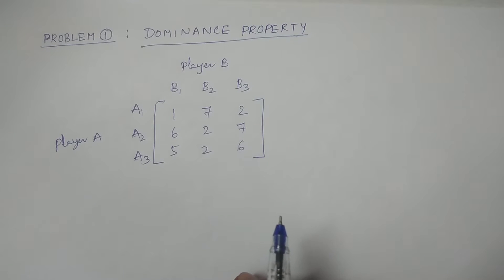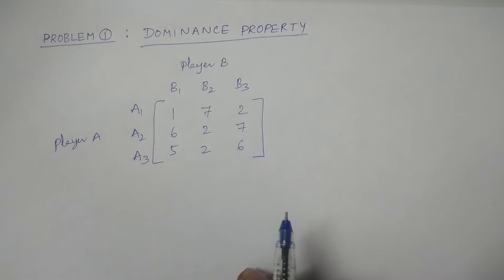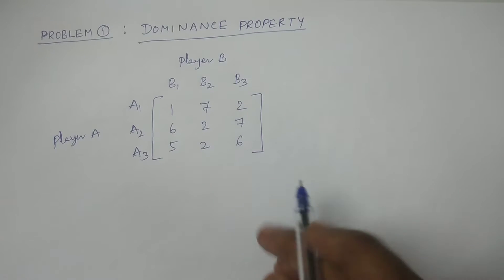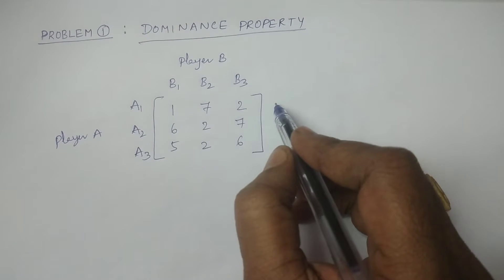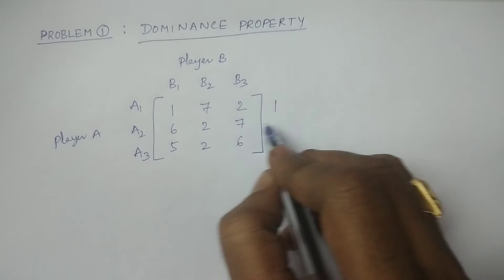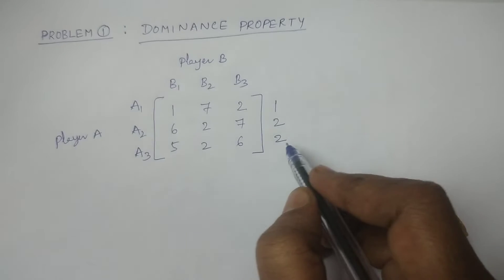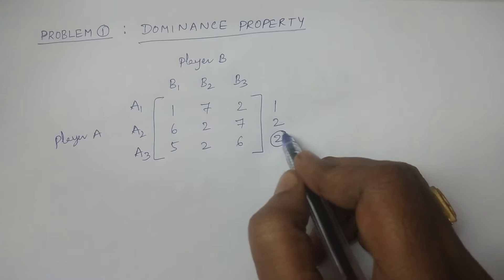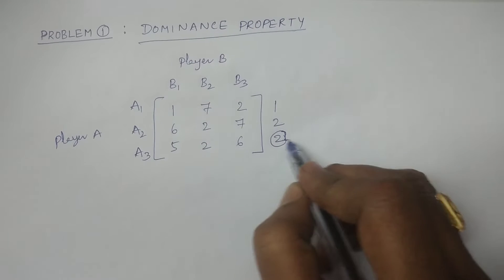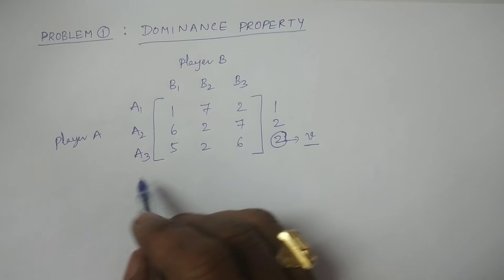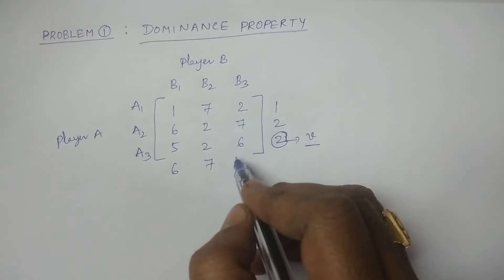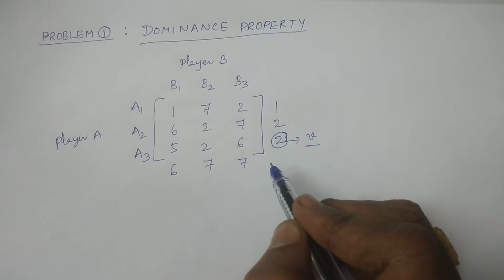If you have a saddle point, you check the problem with the Dominance Principle — this method applies to the saddle point. The row minimums are 1, 2, and 2. This is the maximum of row minimums. In the columns, the values are 6, 7, and 7.